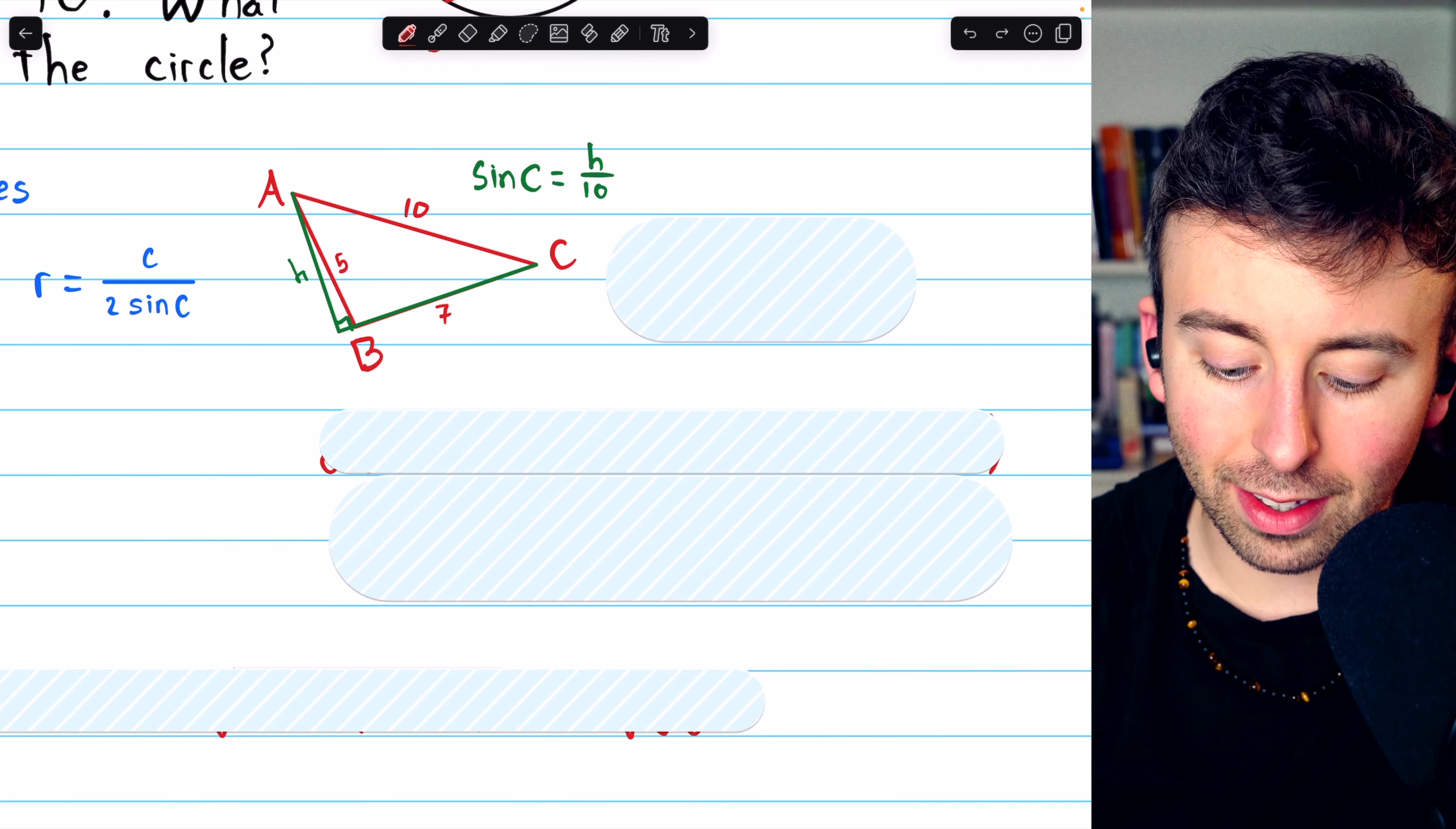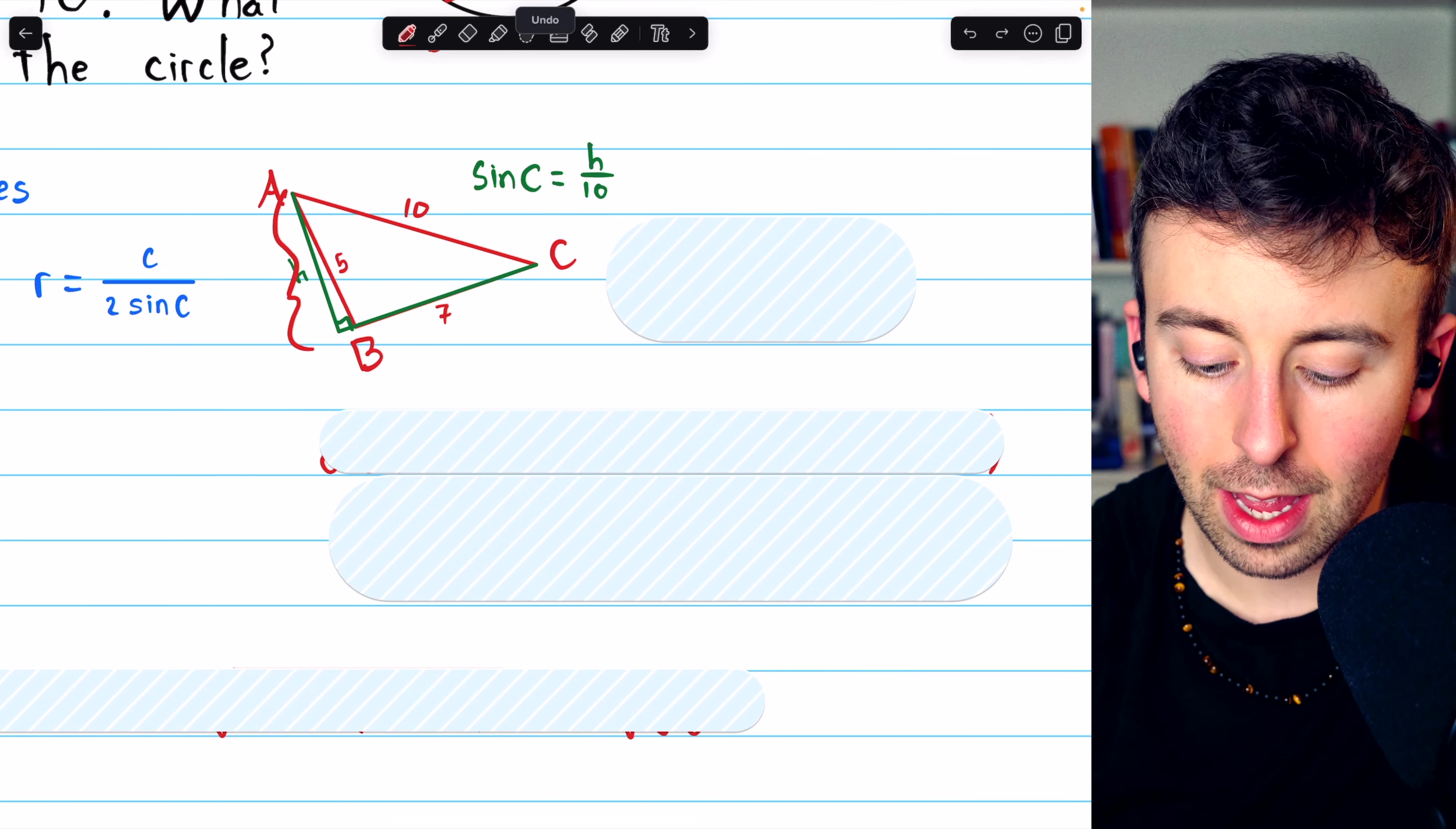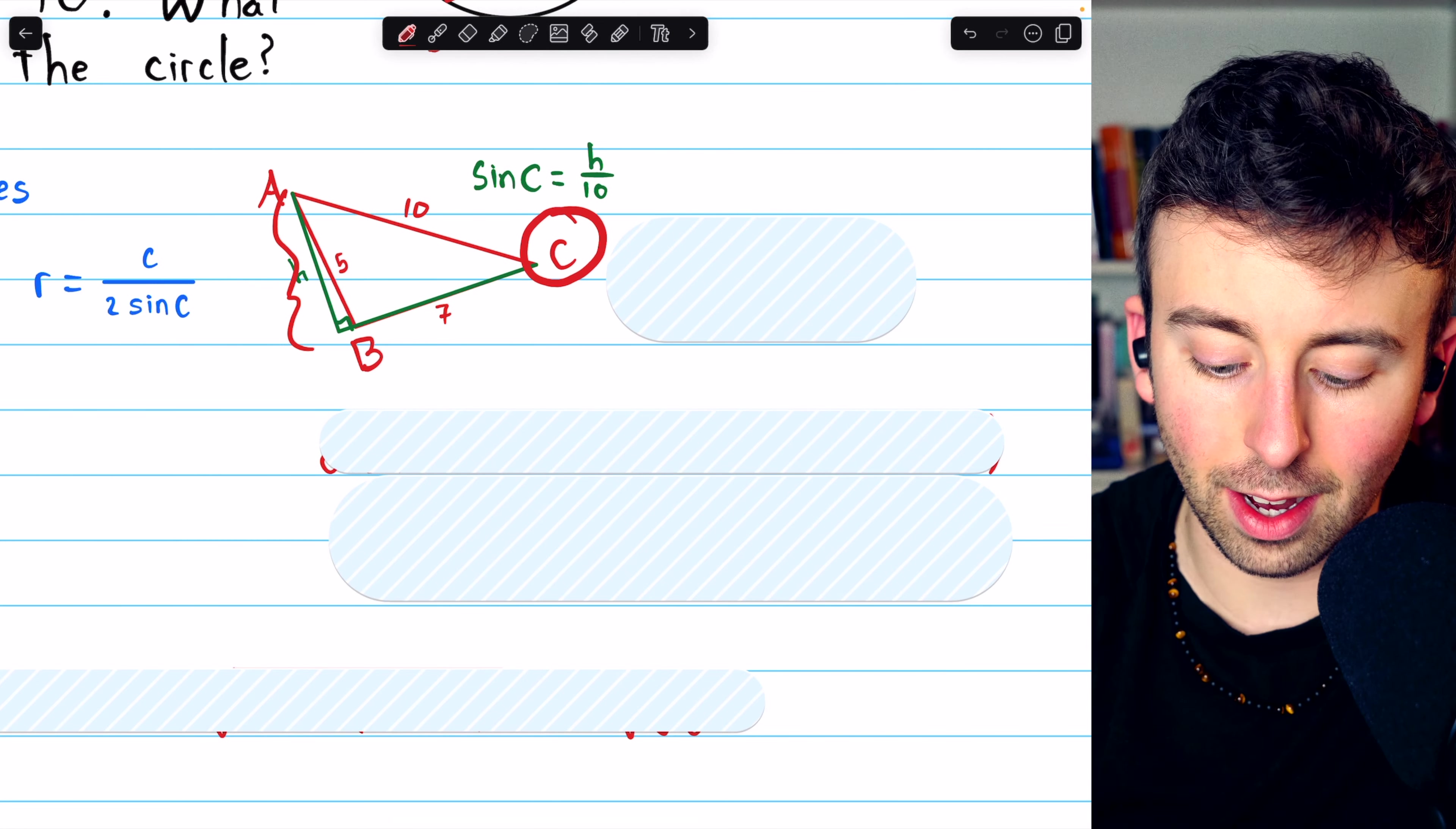Then what is sine of C? Well, in the context of this right triangle, which contains the height of ABC, sine of C would be the opposite side, the height segment, divided by the hypotenuse, which we know to be 10. That's sine of C.